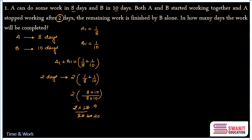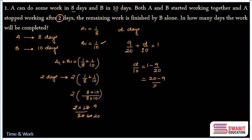The remaining work is to be done by B alone. B's one-day work is 1/10. Suppose B works for D more days and completes the work. So: 9/20 + D/10 = 1. Solving: D/10 = 1 − 9/20 = 11/20, which gives D = 11/2 = 5.5 days for B to finish the remaining work.